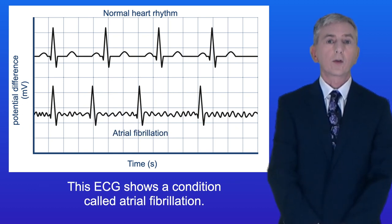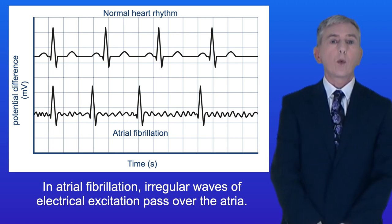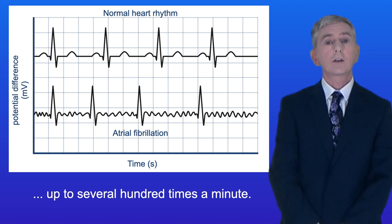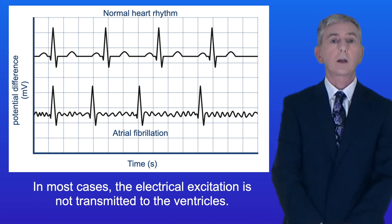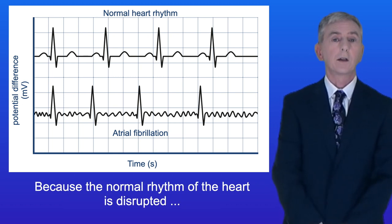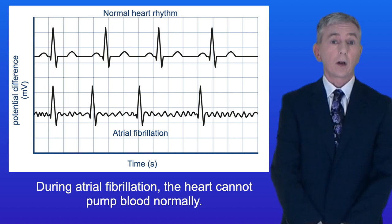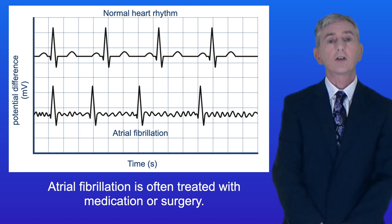This ECG shows a condition called atrial fibrillation. In atrial fibrillation, irregular waves of electrical excitation pass over the atria, causing the atria to contract randomly and rapidly — up to several hundred times a minute. In most cases the electrical excitation is not transmitted to the ventricles, so the ventricles contract less frequently than the atria. Because the normal rhythm of the heart is disrupted, atrial fibrillation is a type of arrhythmia. During atrial fibrillation the heart cannot pump blood normally, and it is often treated with medication or surgery.